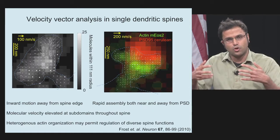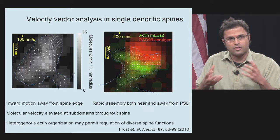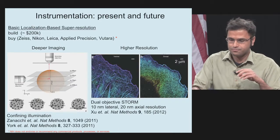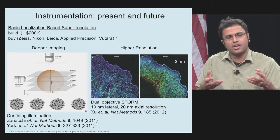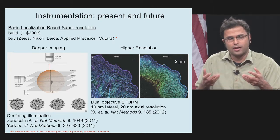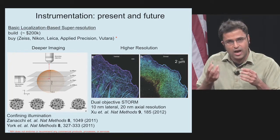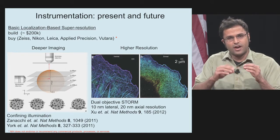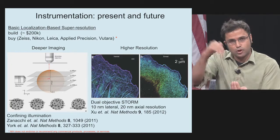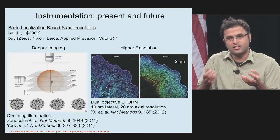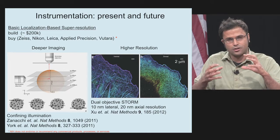One obvious observation in these maps is inward motion away from the spine, but you also see regions of elevated molecular velocity within the spine. This heterogeneous velocity might reflect the diverse roles of actin in promoting spine function. As for the instrumentation for these techniques, these biological applications can all be done on commercially available microscopes from many vendors. The field is continually being pushed to deeper specimens and higher resolution. Using the two-photon effect or a light sheet, you can image structures about 100 microns across, like cellular spheroids. Using multiple objectives to collect more light, you can push the resolution down to the 10-nanometer length scale, enabling observation of different actin cytoskeletal arrangements at the upper and lower edges of the plasma membrane.